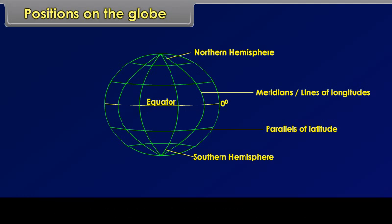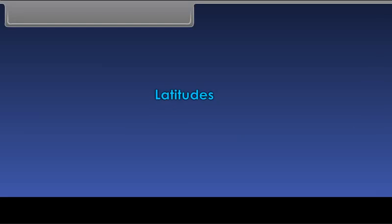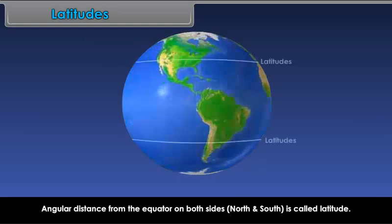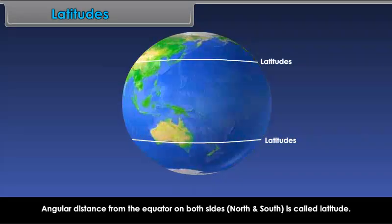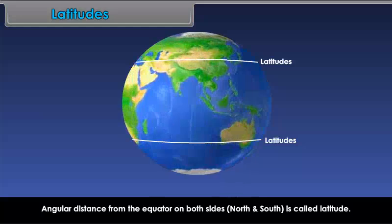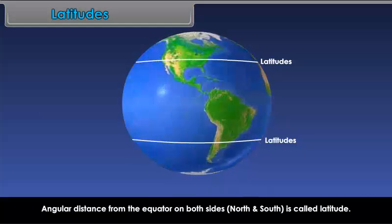We can locate a place by intersecting the meridian and parallels of latitude of the place. Latitudes: Angular distance from the equator on both sides, north and south, is called latitude.